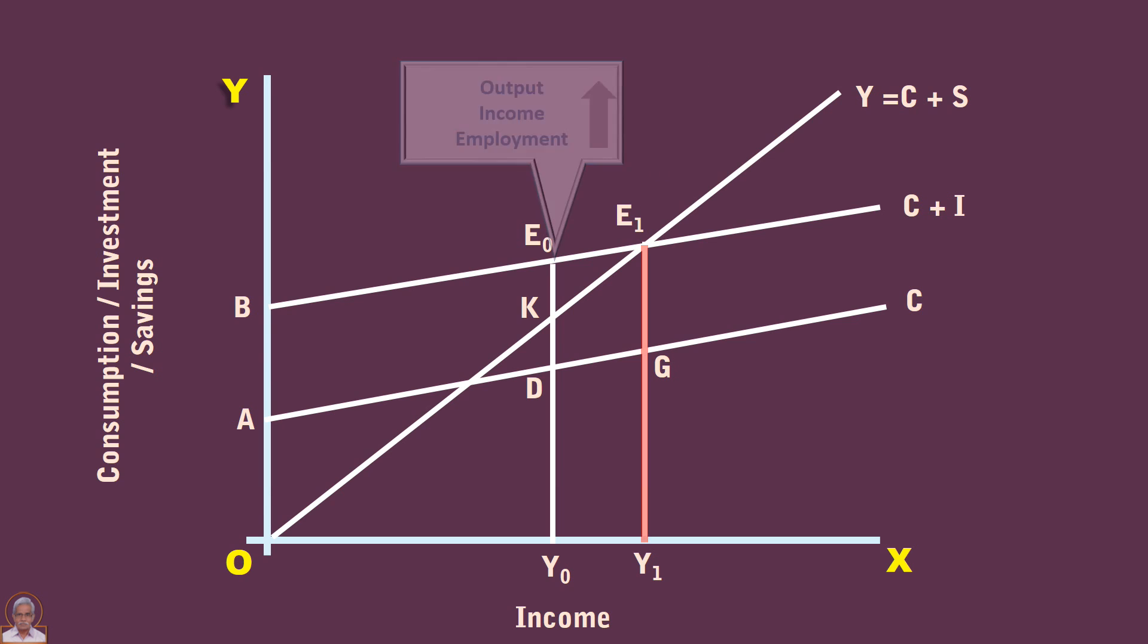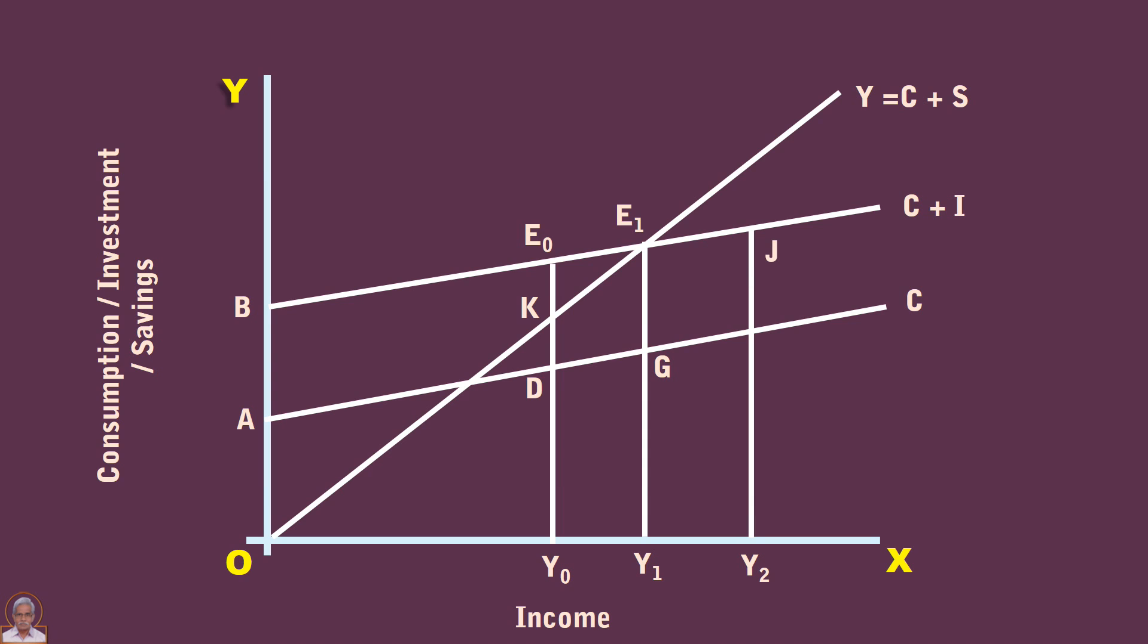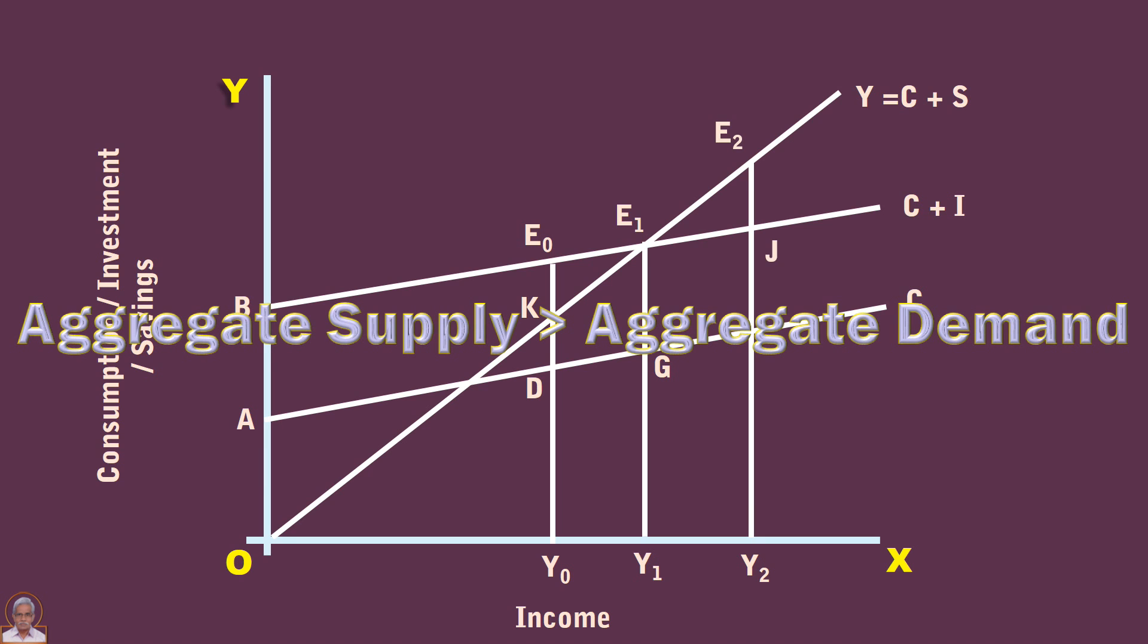Now consider income Y2. It also cannot be an equilibrium income for these reasons. One: the aggregate demand is Y2J. The aggregate supply is Y2E2. Aggregate supply is greater than aggregate demand.